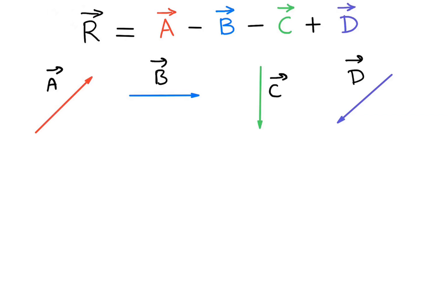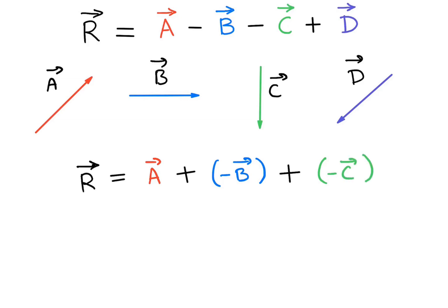We can rewrite the equation as r vector equals a vector plus negative of b vector plus negative of c vector plus d vector. Since we want the negative of b vector, negative b vector points in the opposite direction. Similarly, negative c vector also points in the opposite direction.